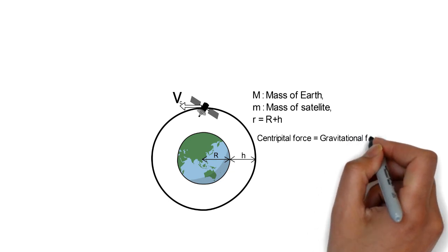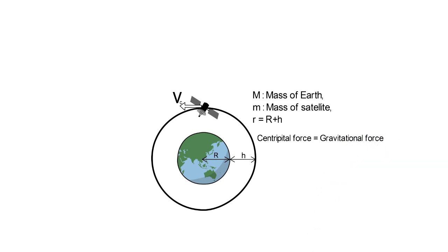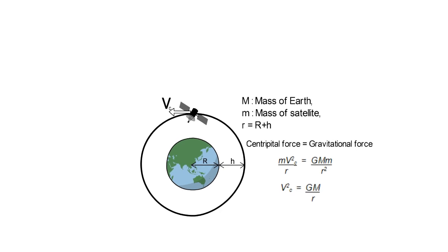So mvc square by r equals GMm by r square. On solving this we get Vc is equal to root GM by r plus h, which is the formula of Critical Velocity.